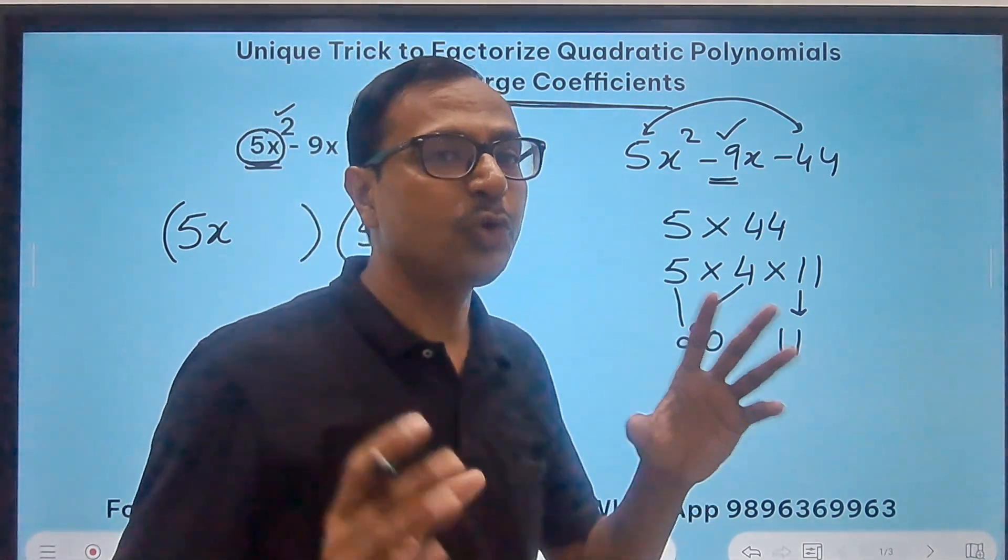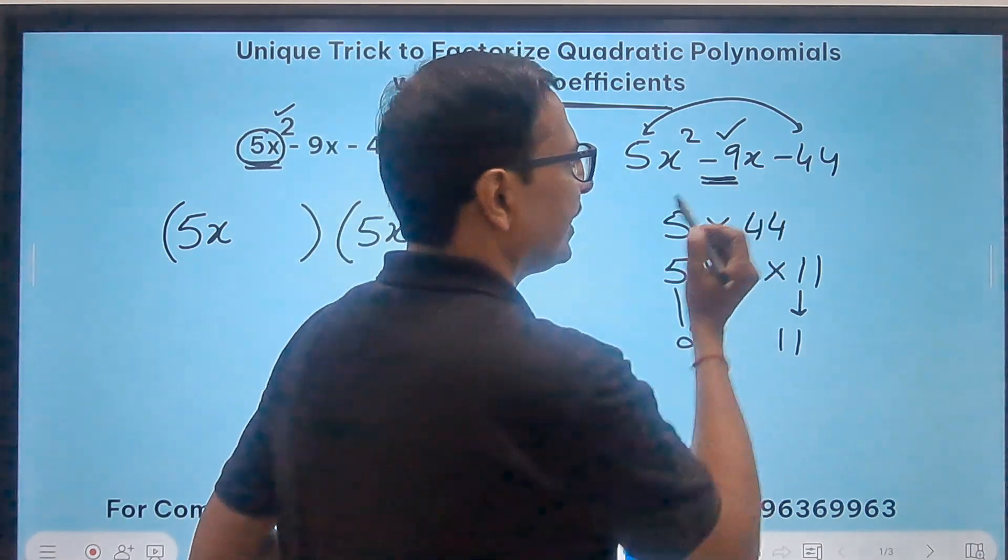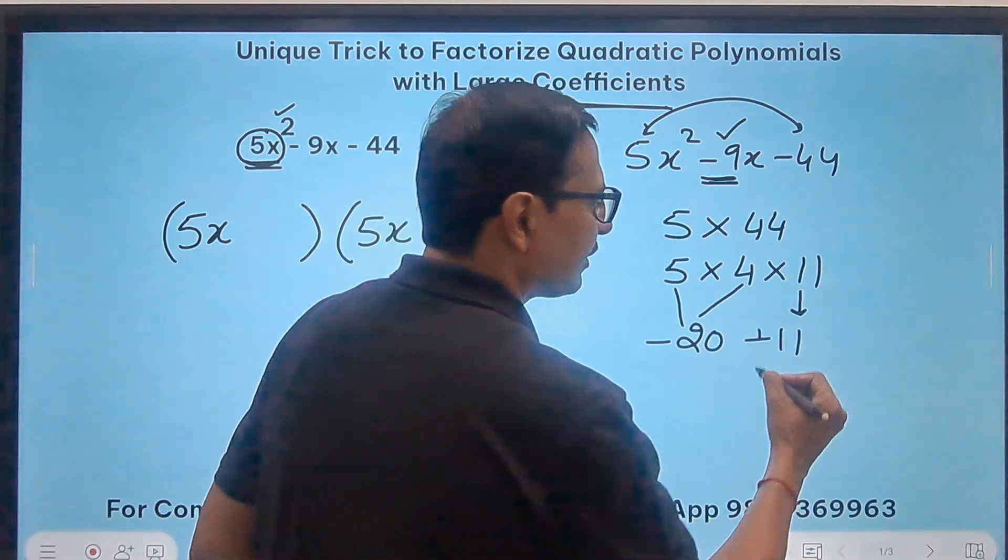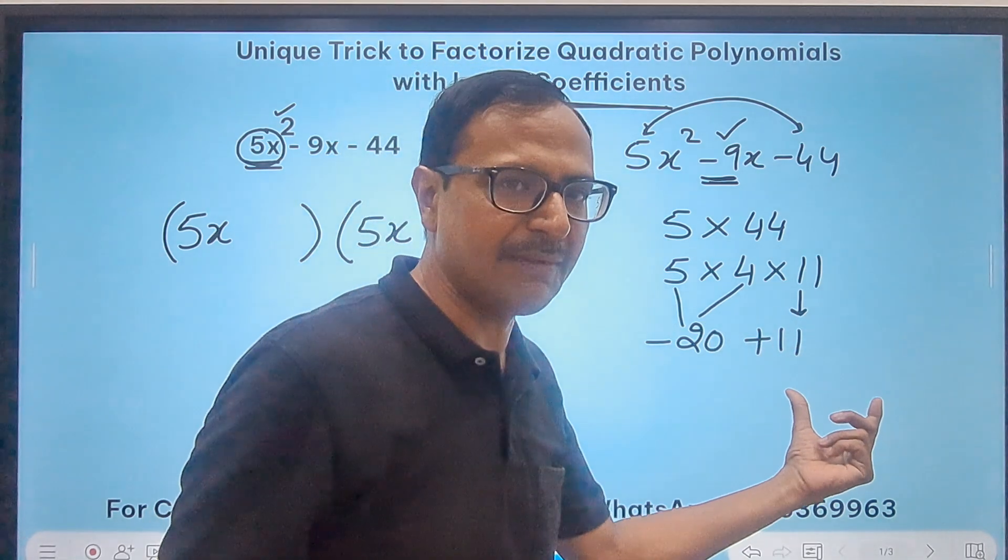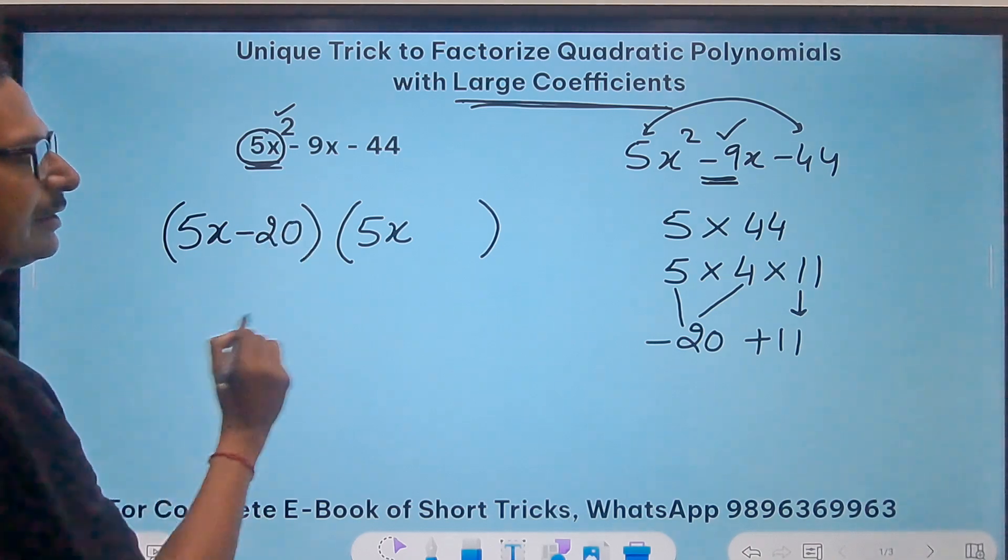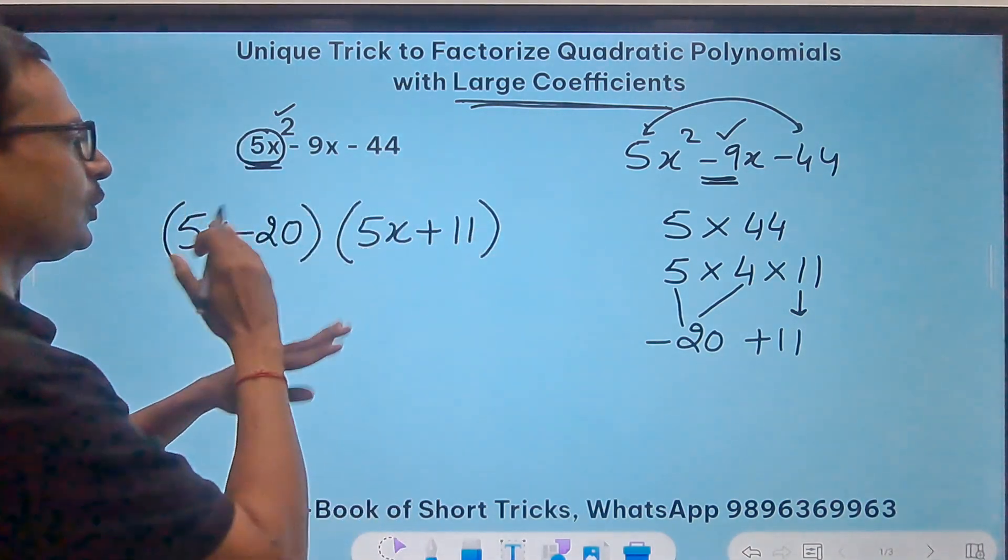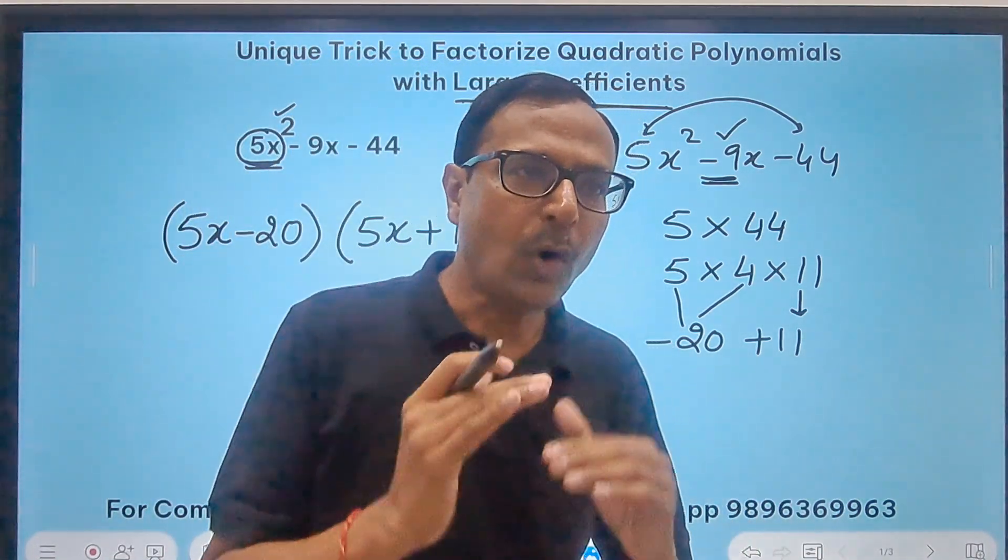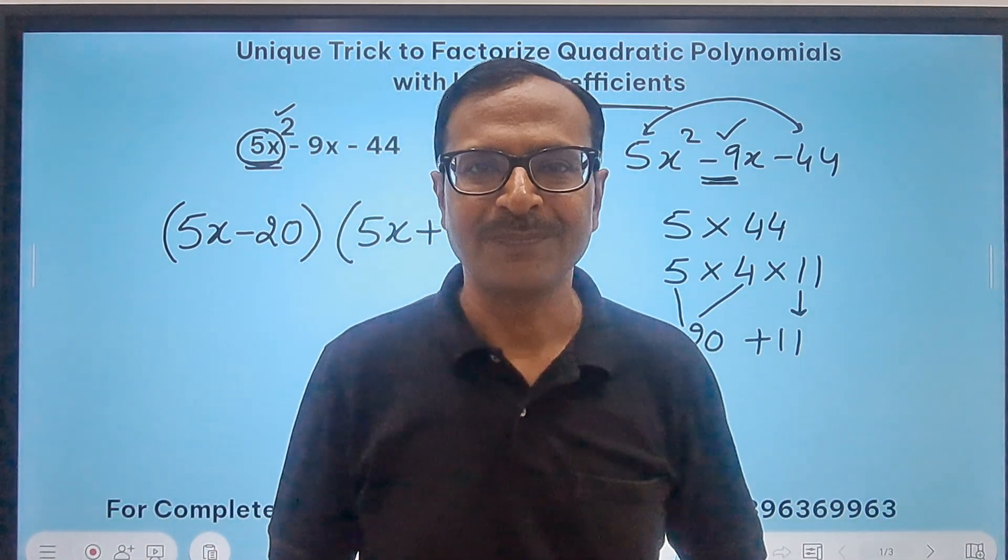So 20 and 11 are going to be my factors, but what about the sign? I need a negative 9 here. So the larger one will be negative and the smaller one will be positive. Now these two integers negative 20 and plus 11 I'll have to write here in this second part of each bracket. Negative 20 and plus 11, you can swap them, you can write plus 11 here or negative 20 here, that doesn't matter. The order in which you write the factors doesn't matter in quadratic polynomial factorization.